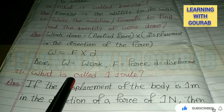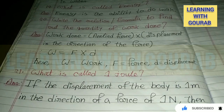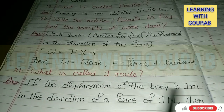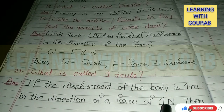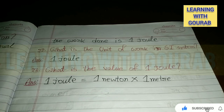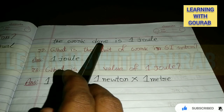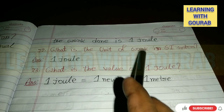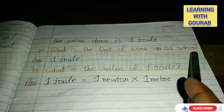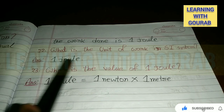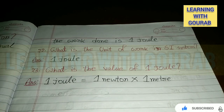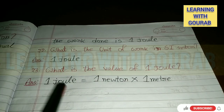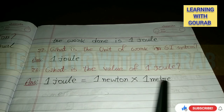Next question: What is called one joule? Answer: If the displacement of the body is 1 meter in the direction of a force of 1 Newton, then the work done is 1 joule. What is the unit of work in the SI system? Answer: One joule. What is the value of one joule? Answer: One joule equals one Newton multiplied by one meter.